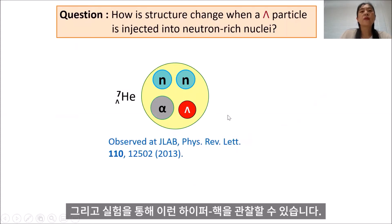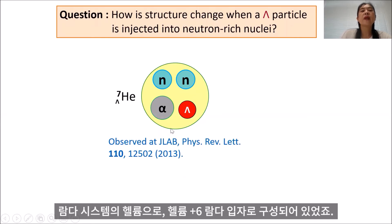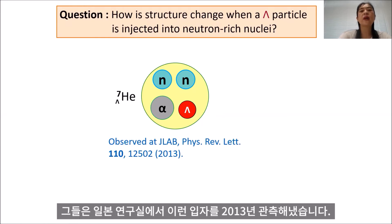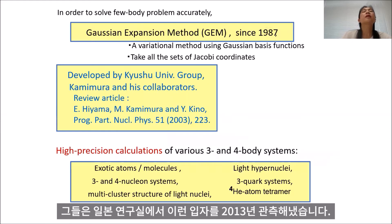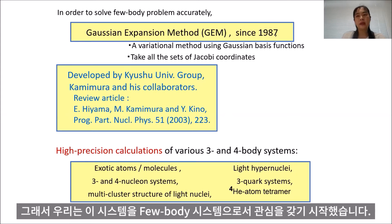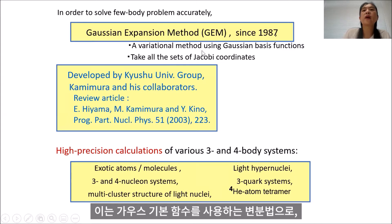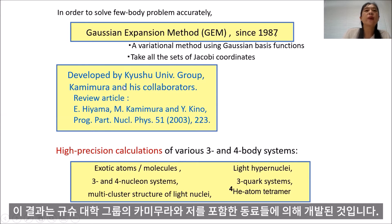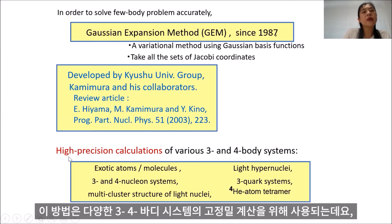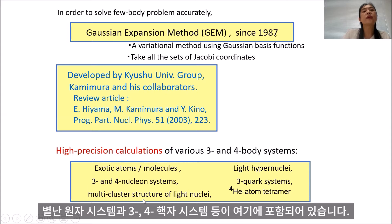For this purpose, experimentally they observed the hypernucleus named the Helium-7-lambda system, which consists of Helium-6 plus a lambda particle. They observed this system at Jefferson Laboratory in 2013. We are interested in solving this system as a 4-body system. In order to solve the 4-body system accurately, we use the Gaussian expansion method, which is a variational method using Gaussian basis functions. The method takes all sets of Jacobi coordinates and has been developed by the Kyushu University group, namely Kamimura and his collaborators, including myself. This method has been applied to high-precision calculations of various 3- and 4-body systems, such as exotic atomic systems and 3- and 4-nucleon systems.